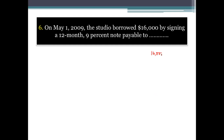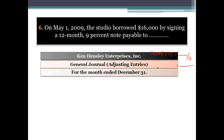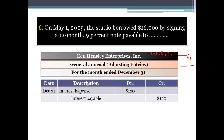To calculate the interest expense, we multiply $16,000 by 9%, then divide by 12 to get the interest expense for one month. We need to record the interest expense for the month of December. The interest expense for one month is $120.